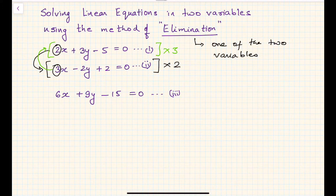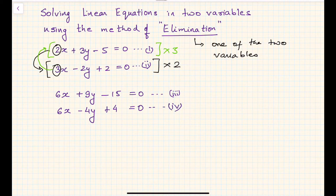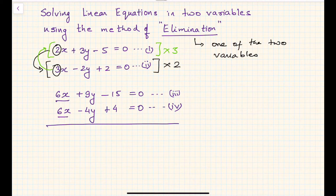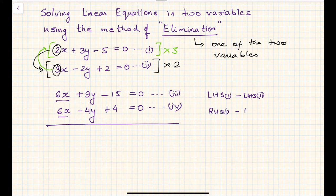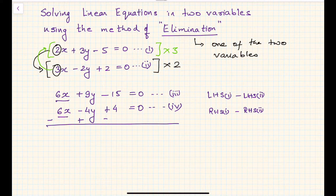Multiplying the second equation by 2 gives us 6x − 4y + 4 = 0. Let this be equation number four. Now clearly, the term containing x is 6x in both equations — the coefficients of x are equated. What's left is to subtract the two equations: LHS of three minus LHS of four, and RHS of three minus RHS of four. So 6x − 6x = 0, and 9y − (−4y) = 13y, and the constant gives −19.